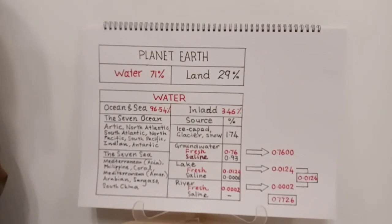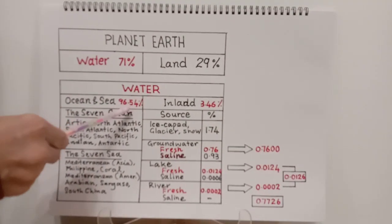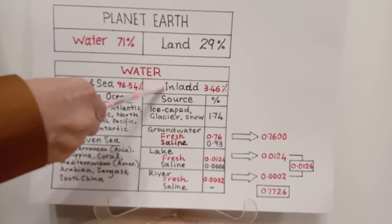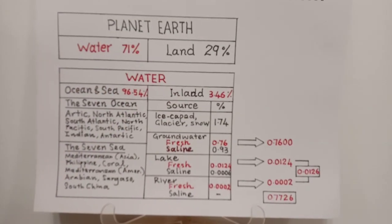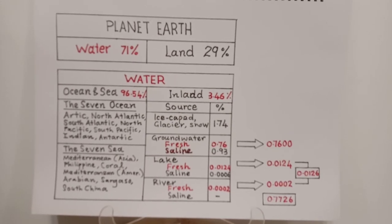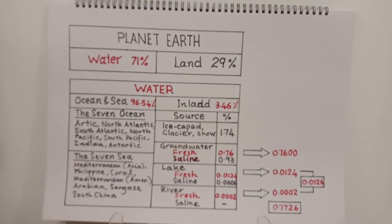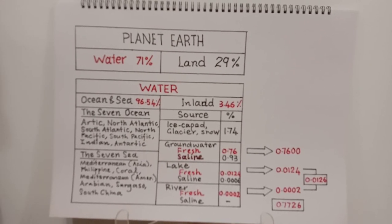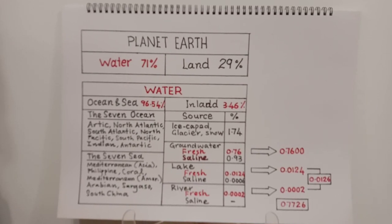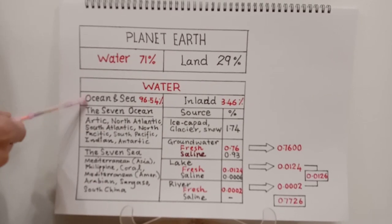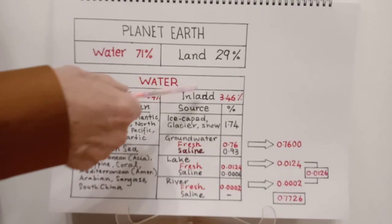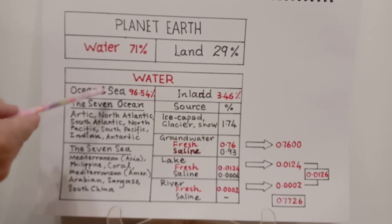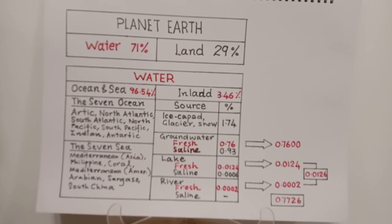Inland water covers the rest, that is about 3.46%, making the total 100%. The simplest way to characterize the water is by dividing it into ocean and sea water, and inland water. Ocean and sea water make up about 96.54% of the total water on our planet.